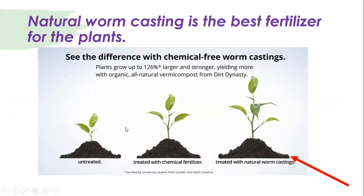Here is a clear example: a plant with natural worm casting or natural fertilizer, a plant without fertilizer, and a plant with chemical fertilizer. As you can see, the best fertilizer for plants is the natural worm casting.